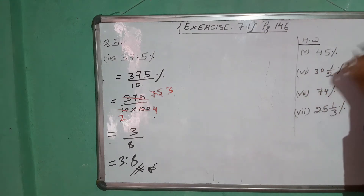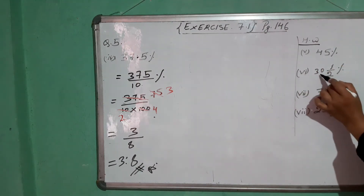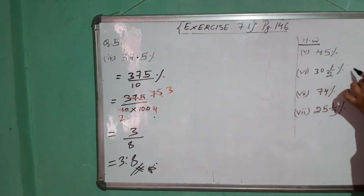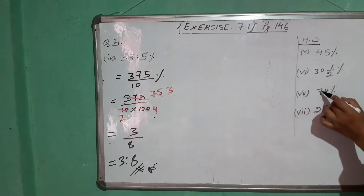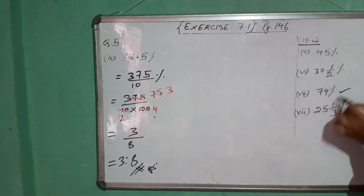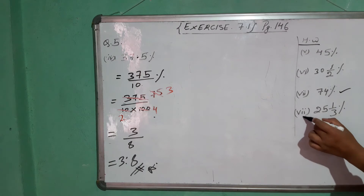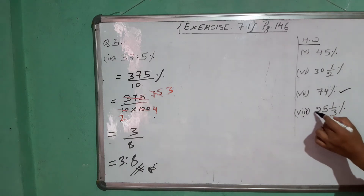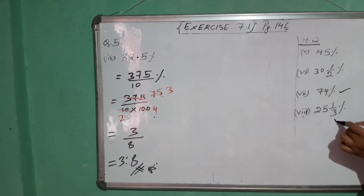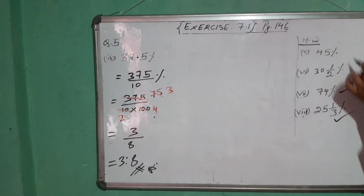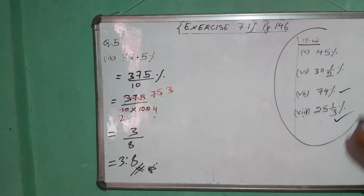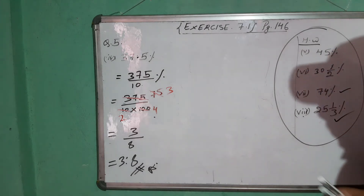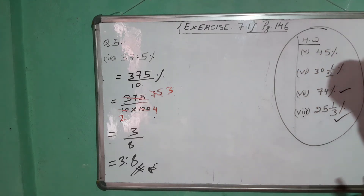Your homework is: question number 5 — number 5: 45%, number 6: 3½%, number 7: 74%, number 8: 25⅓%. These questions are not in your book; I have given them from my side. This is your home task.